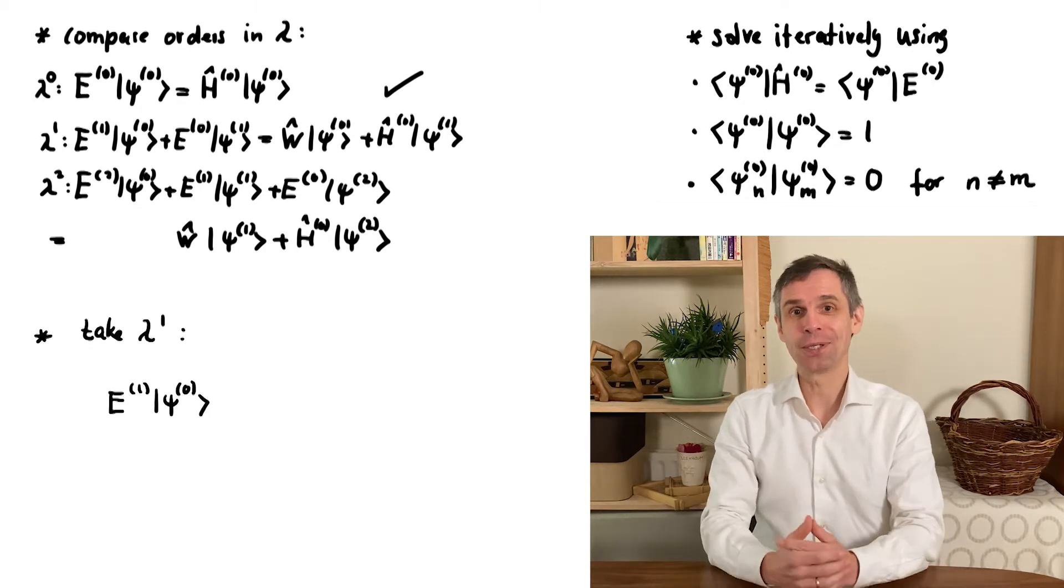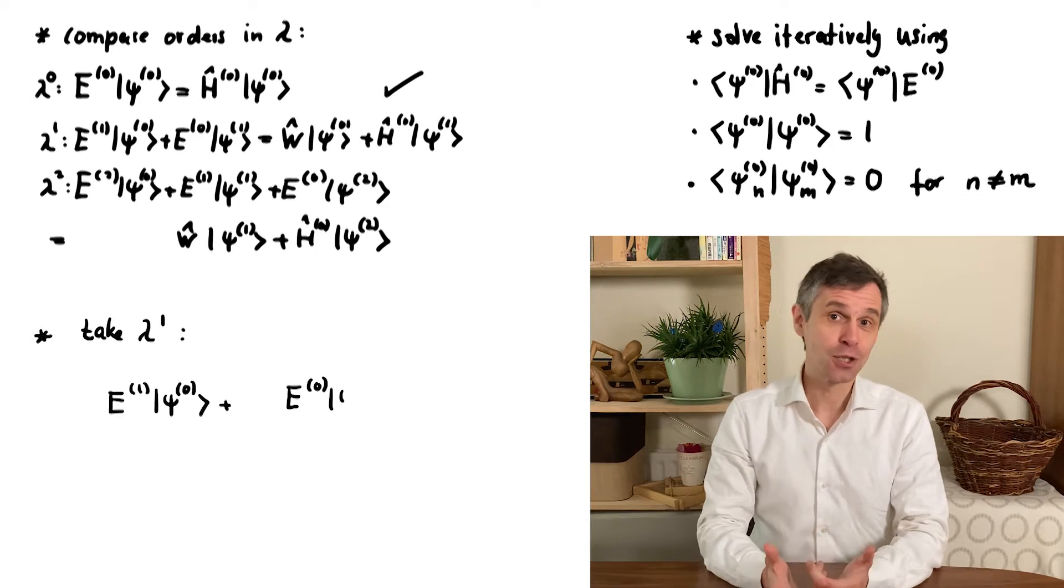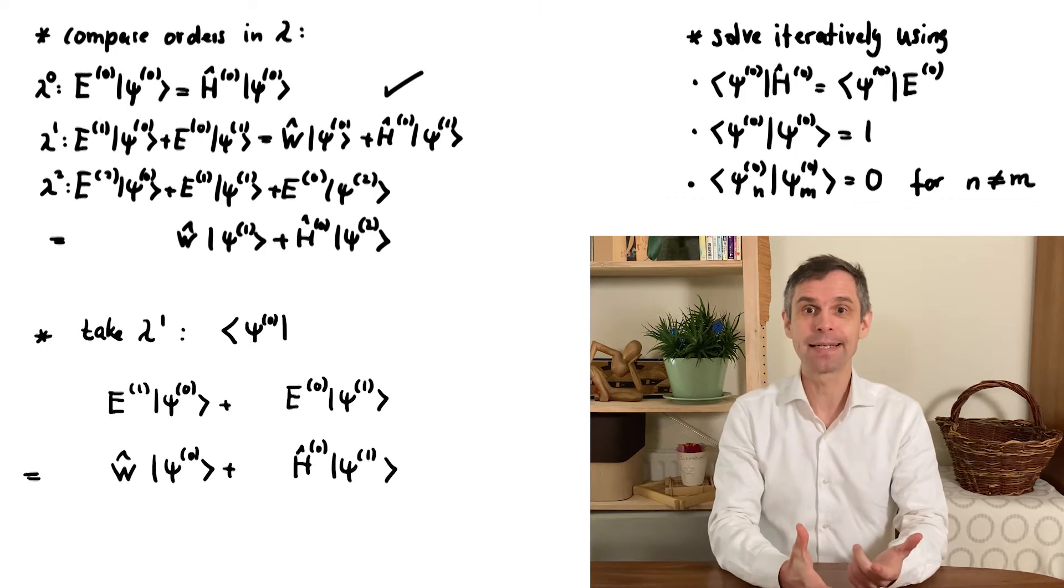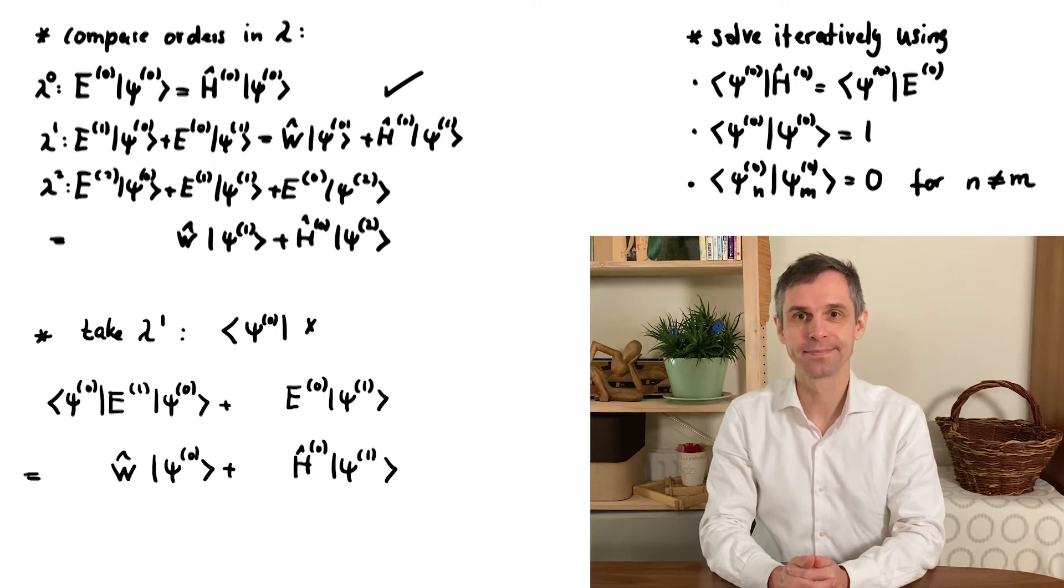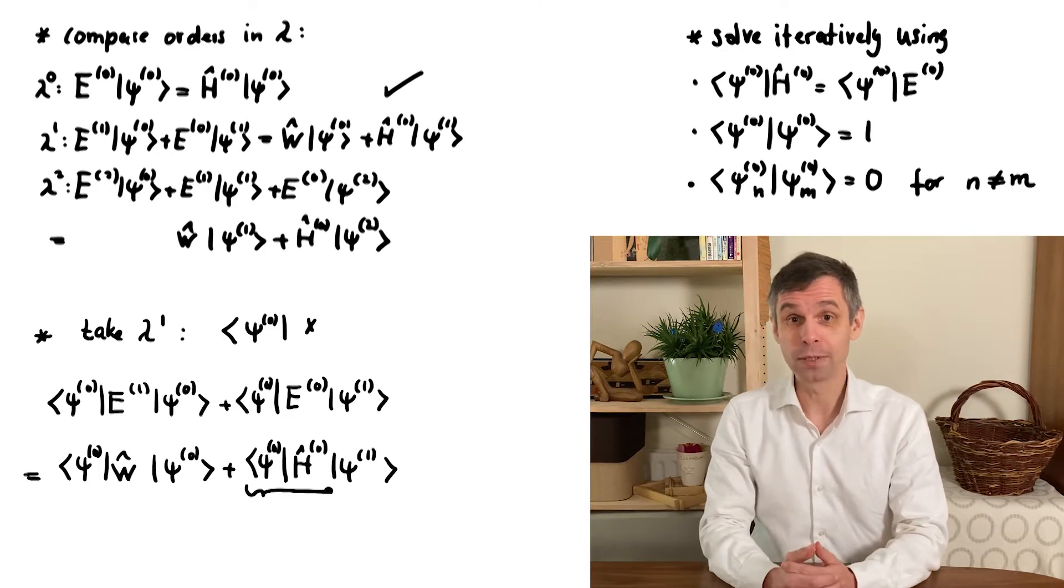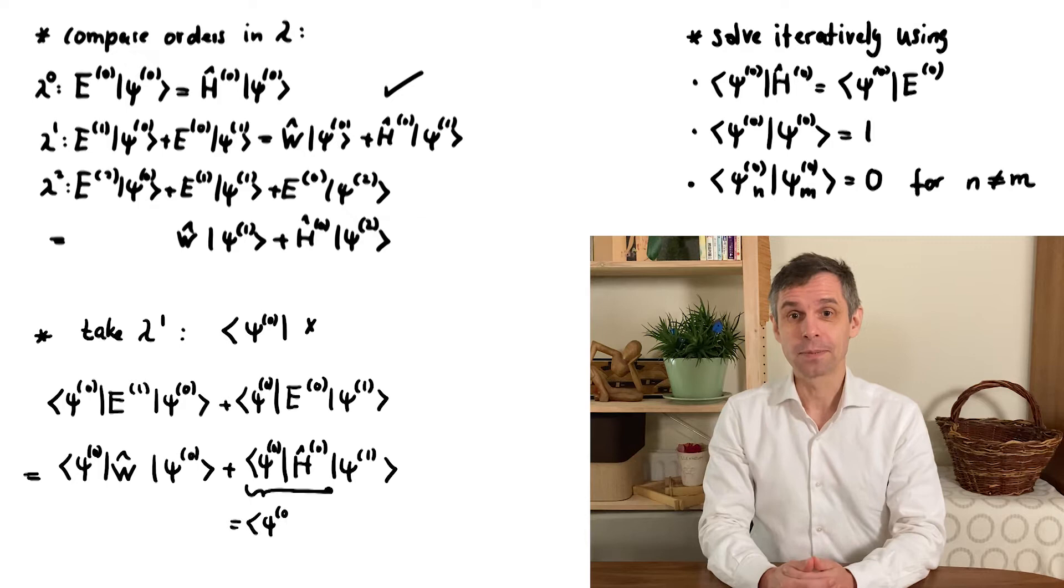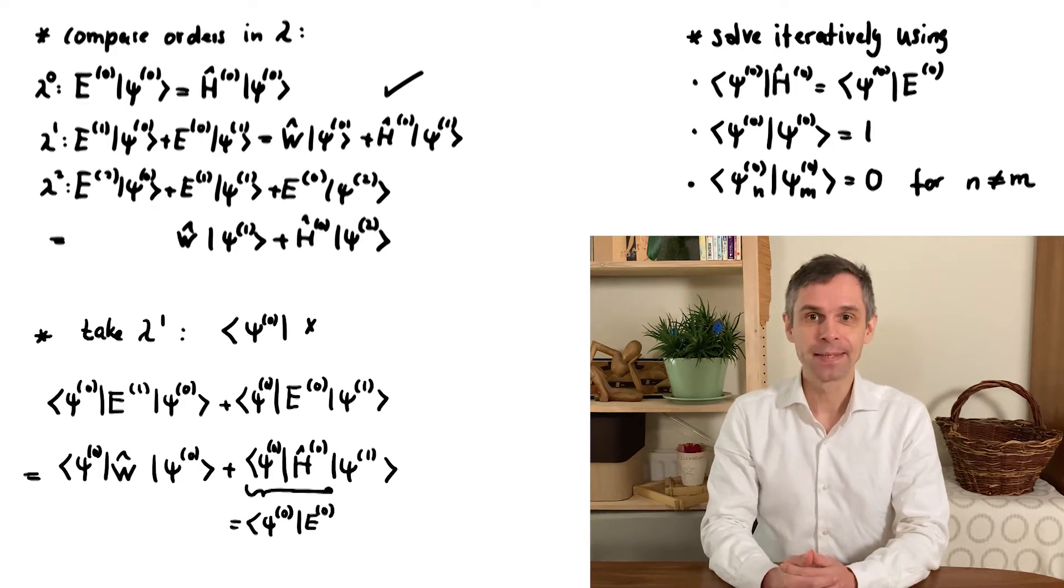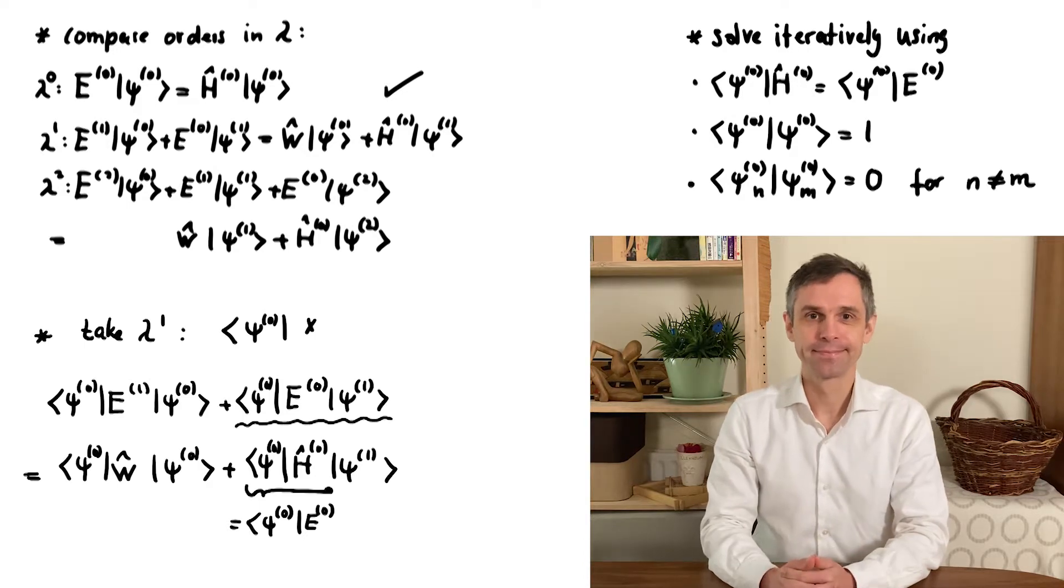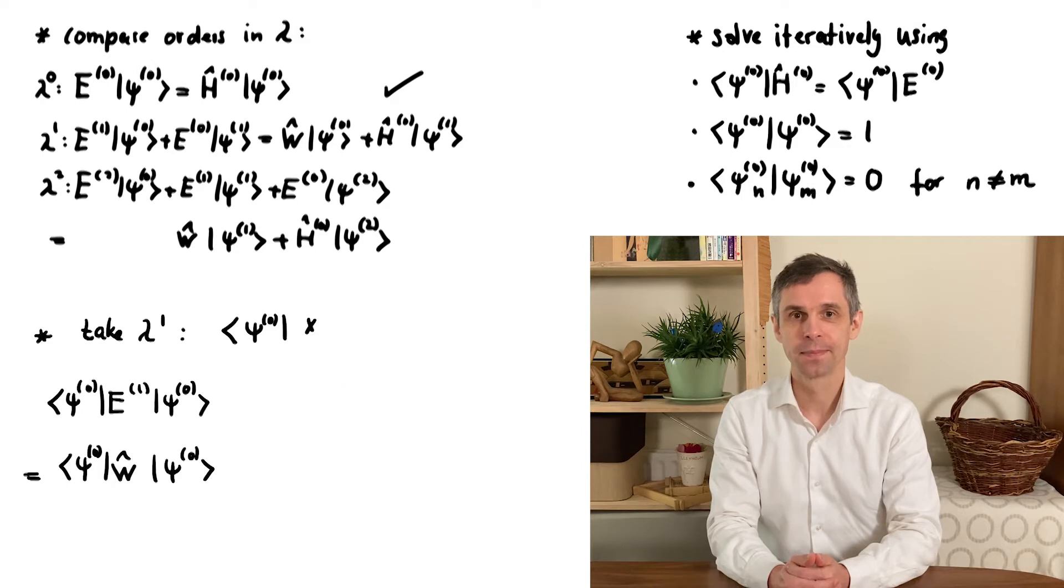So let us have a look how we can use the relation in first order of lambda. I just copied it here leaving some space so that we can now multiply this from the left by the original eigenstate psi naught. Now the term which I indicate here is just the Schrödinger equation rewritten for the dual state I just mentioned, so we can express it in terms of the energy. And in this way it cancels with the term that I underline.